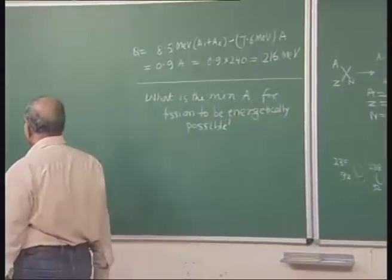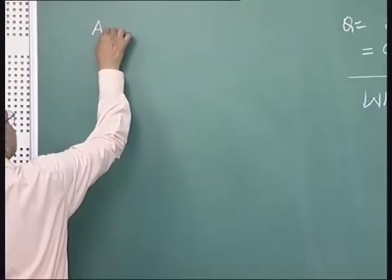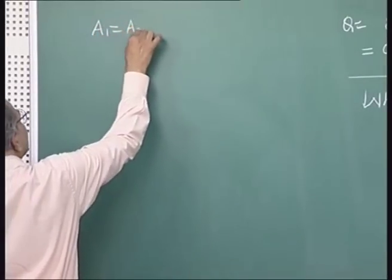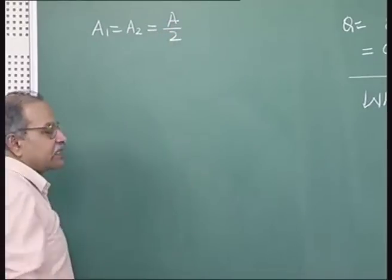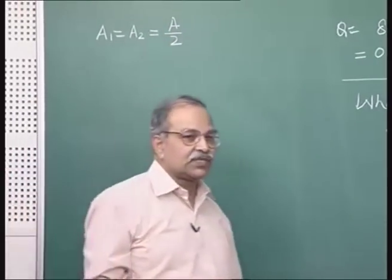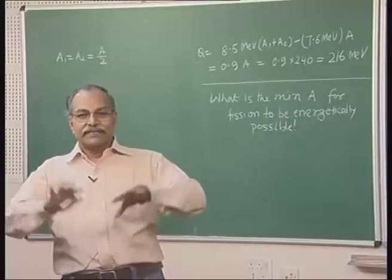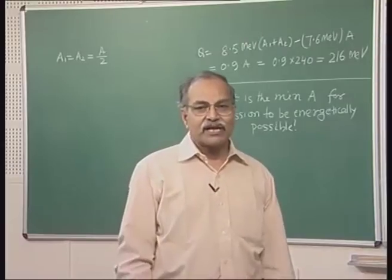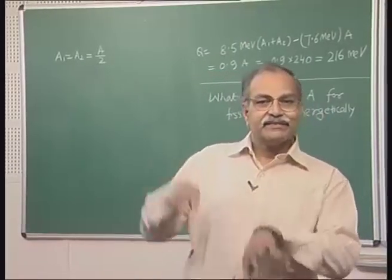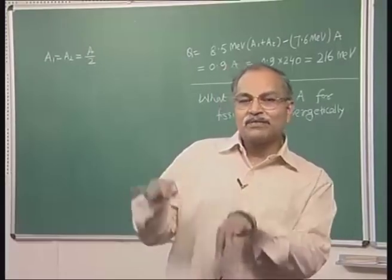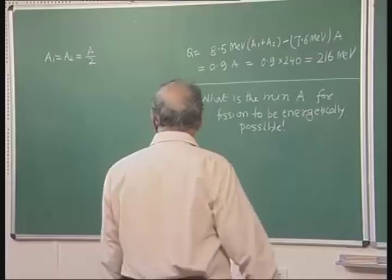Consider symmetric fission where A₁ = A₂ = A/2. In normal fission reactions, the probability of symmetric fission is less than asymmetric fission where the two masses differ slightly, but let us calculate for this symmetric case.